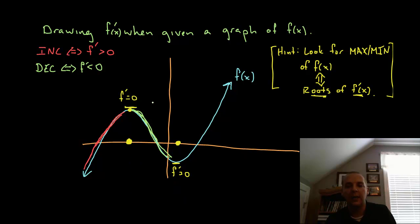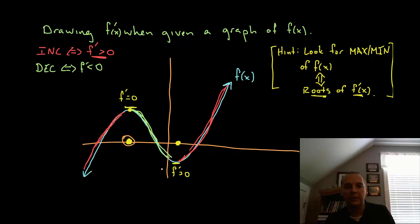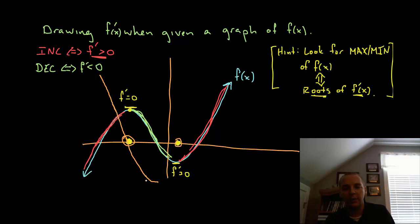Likewise, for the last interval after the second dot, the function is increasing again, which means the first derivative would be positive again. So putting it all together: how can we stay above the x-axis, come down and touch this yellow dot, go below the x-axis to get negative y values, come back and touch this yellow dot, and then be positive after that? Then once you're negative you're going to have to turn around at some point to get back to this other root, and after that root you'll go back up again.